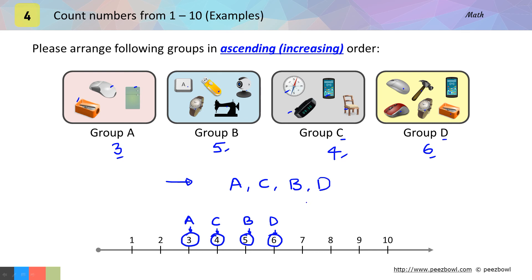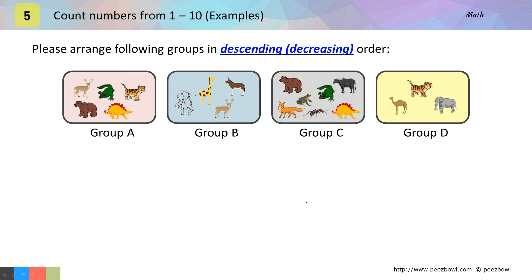Let us take one more example. This time we need to arrange the following groups in descending order or decreasing order. First, write the number of animals in each group. Group A has one, two, three, four, and five — five animals. Group B has one, two, three, and four — four animals.